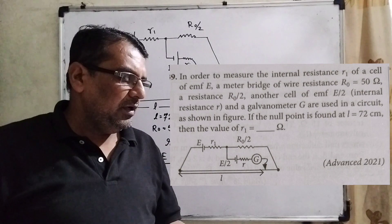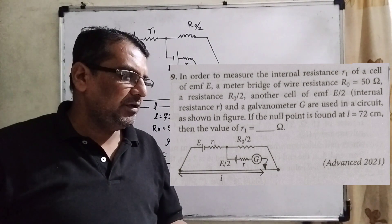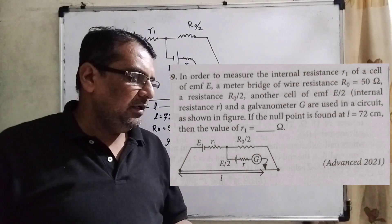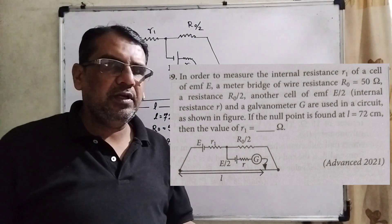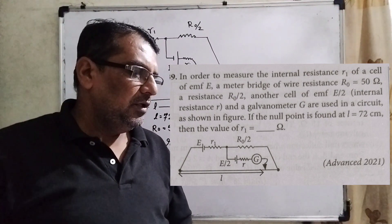If the null point is found at L equal to 72 centimeters, then find the value of R1. This question is from JEE Advanced 2021.